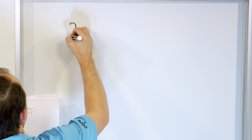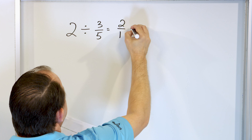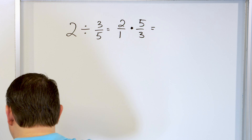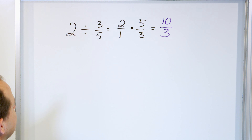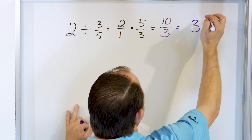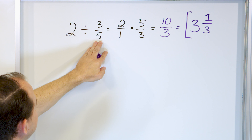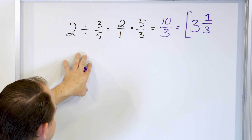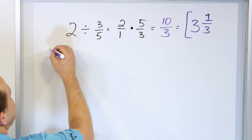We only have two more problems — stick with me till the end. Let's take 2 and divide it by 3/5. Write the whole number as 2 over 1, change to multiplication, then flip to 5 over 3. Multiply: 2 times 5 is 10, and 1 times 3 is 3. We have an improper fraction: 3 goes into 10 three whole times (3 × 3 = 9), and 10 − 9 = 1, so the final answer is 3 and 1/3. That means two wholes divided by 3/5 goes three whole times, plus another third of this thing can actually fit in.